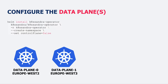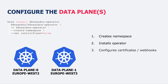Next we configure the data planes. For each data plane we run a Helm install command that creates the namespace, installs the operator, configures certificates and webhooks, and generates access credentials. It knows to do this because we set controlPlane=false, telling the K8ssandra operator: in this environment you are receiving your K8ssandra clusters from somewhere else, and your job is to realize part of that K8ssandra cluster inside your local cluster infrastructure.